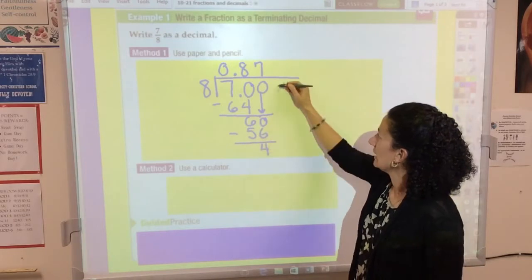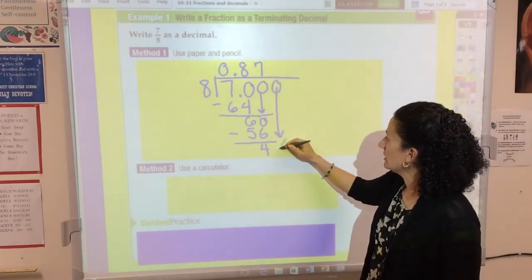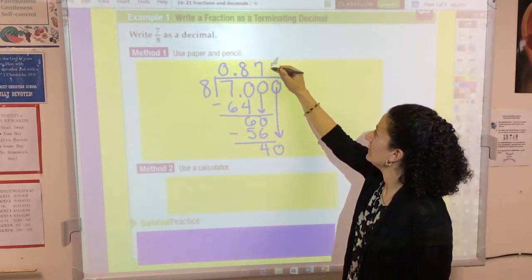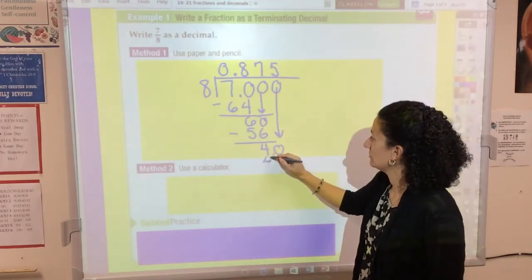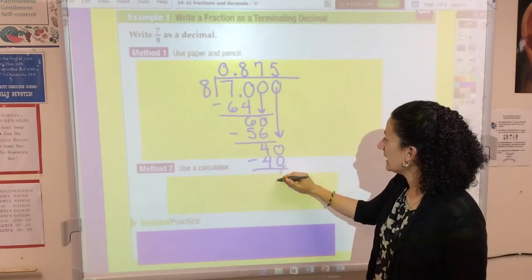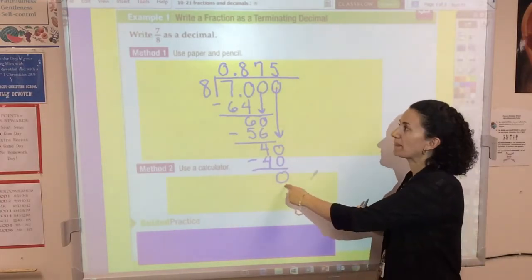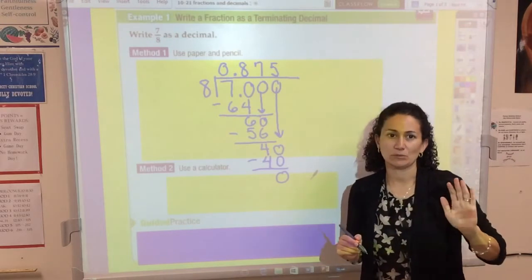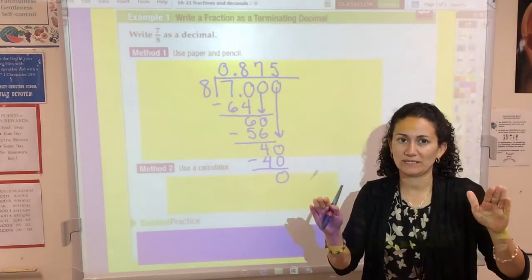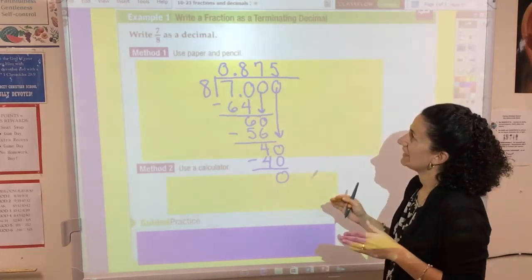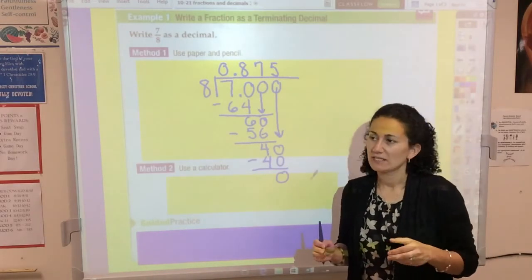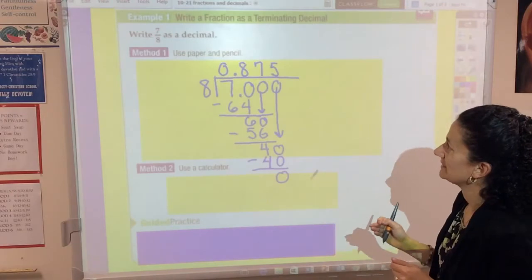We're going to keep dropping zeros until we figure out if it is a terminating or repeating decimal. Sometimes it goes on forever. Now I'm going to divide 8 into 60, and that is 7 times because 7 times 8 is 56. Remainder 4. And when I bring down one more zero, I see that 8 goes into 40 exactly 5 times. Once I have a remainder of zero, I am finished. My decimal is a terminating decimal. That means it ends, it terminates: 0.875.